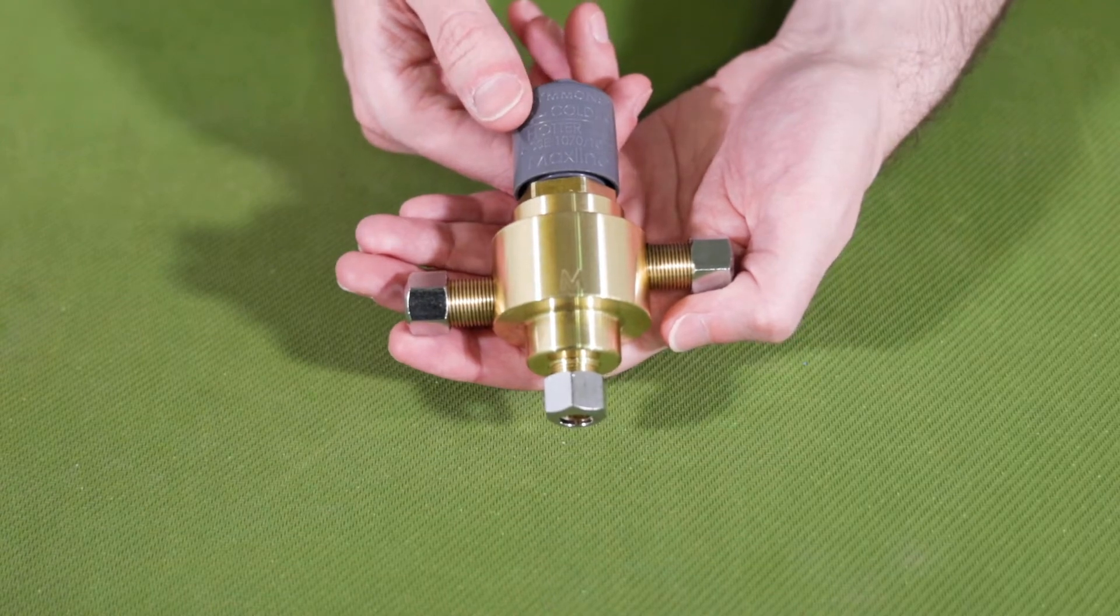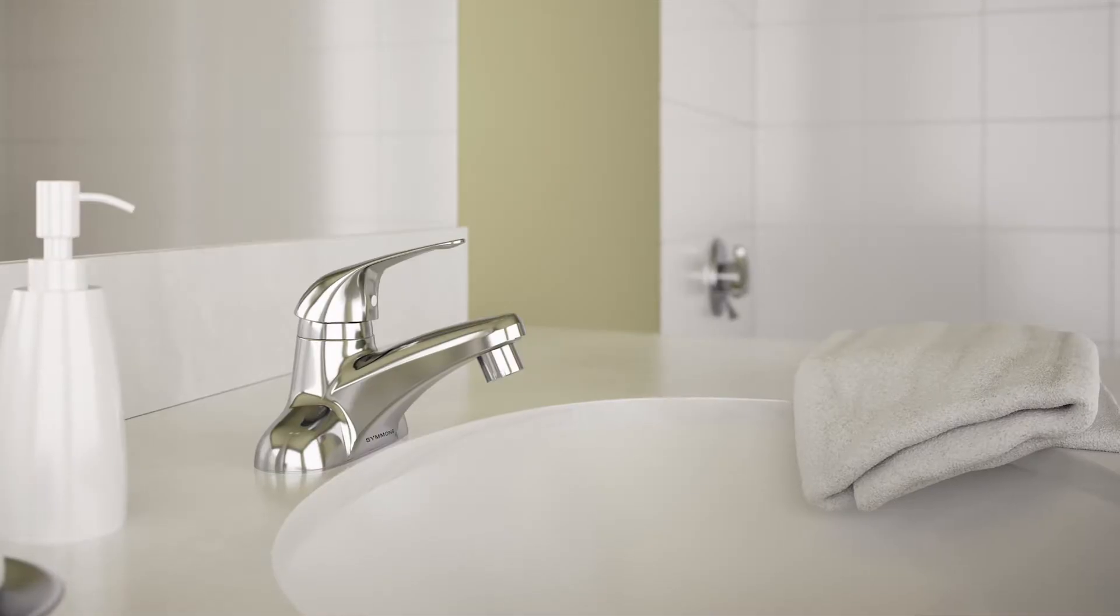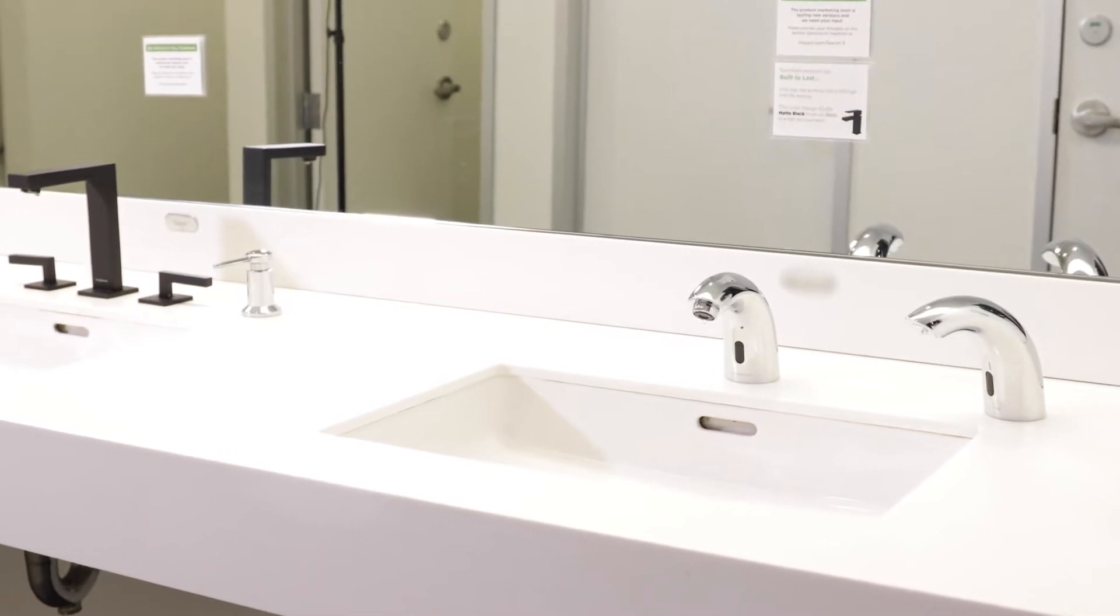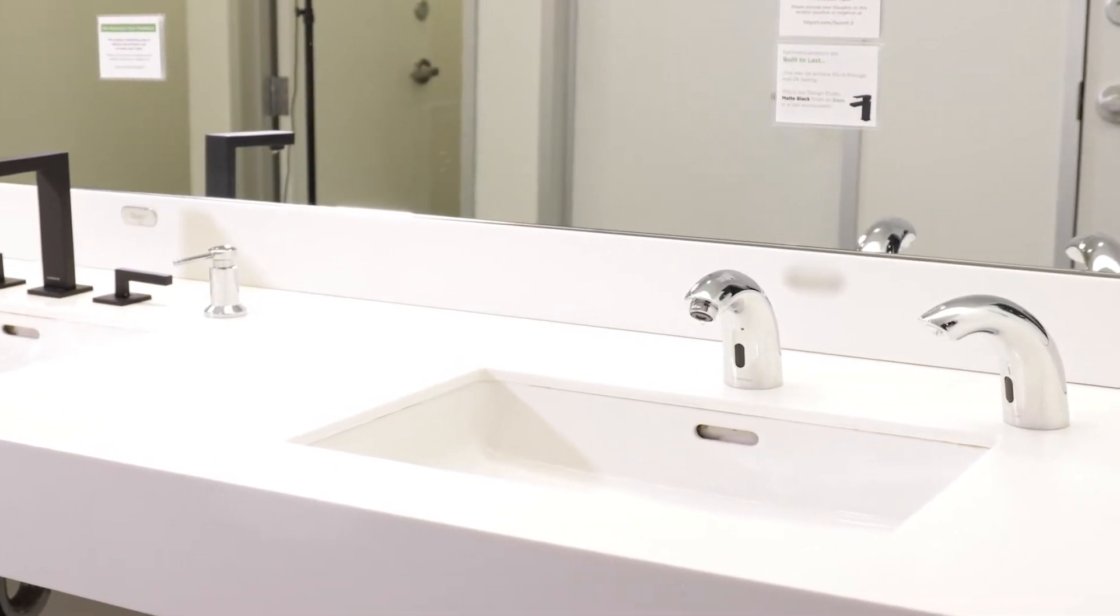One of the great things about the MaxLine is its versatility. There are so many applications where it can be used, but it would be difficult to cover them all in one video. So, we'll show the most common scenario, which is supplying tempered water to a sensor faucet in a commercial or public bathroom.